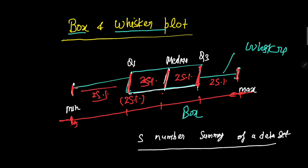If you want to interpret any value: around the median, 50 percent of the data values lie. At quartile three, 75 percent of the data lies to the left and 25 percent lies to the right. At quartile one, 25 percent of data values lie to the left and 75 percent lie to the right.